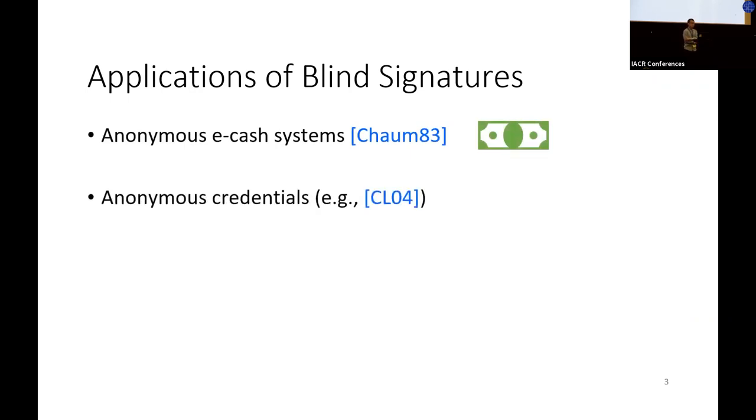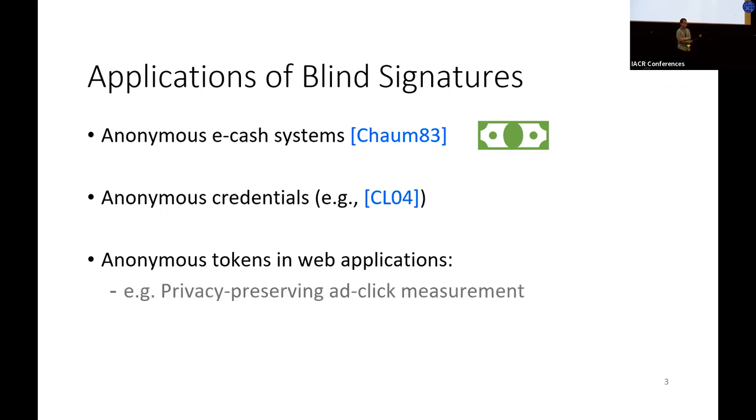Blind signatures have a number of well-known applications, for example in anonymous e-cash systems or anonymous credentials. More recently they have regained popularity due to their ability to implement anonymous tokens in web applications, for example for privacy-preserving ad measurement.